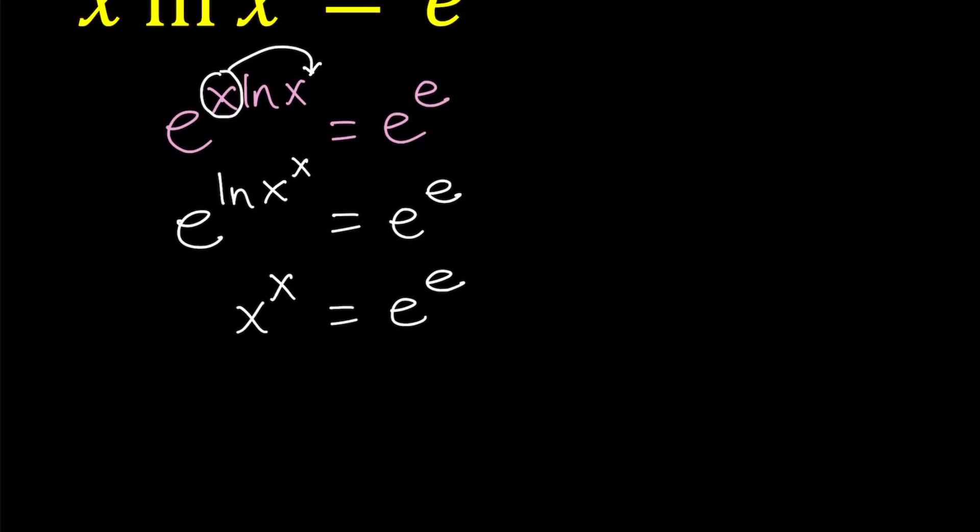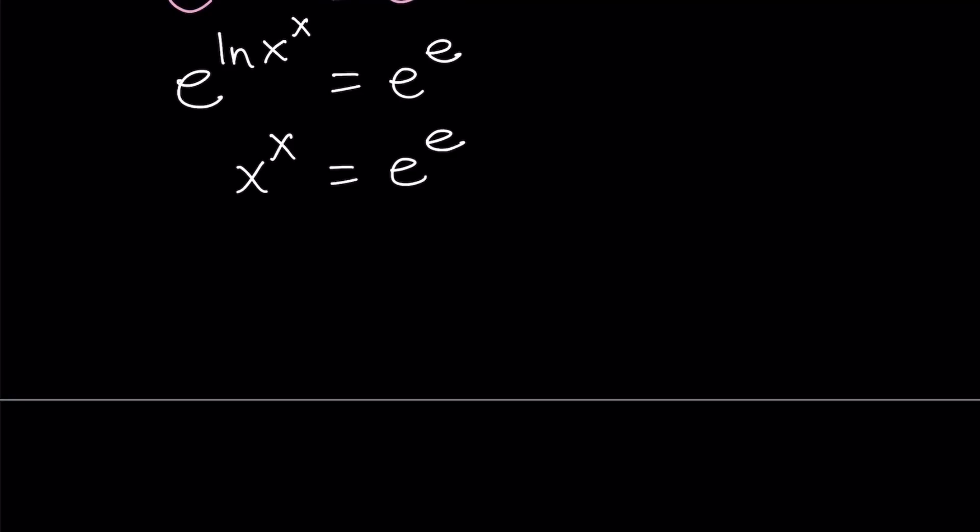And as you know, e to the power ln x to the power x is the same as x to the power x. So this should tell you something. If x to the power x is equal to e to the power e, at least you can tell that x equals e is a possible solution, right? But the million dollar question is, is this the only solution?